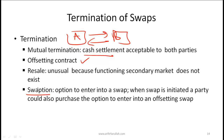The fourth termination method is a swaption — an option to enter into a swap. When you enter into a swap, you might also purchase a swaption for an offsetting swap so that if you want to exit your original swap, you can exercise the swaption. At Level 1, just know that one way of getting out of a swap is to use a swaption; more detail will be covered at Level 2.